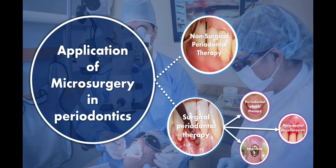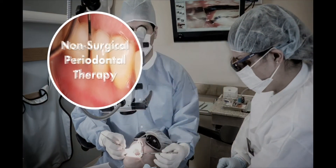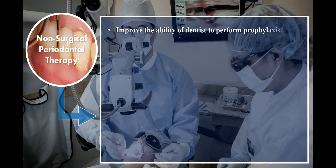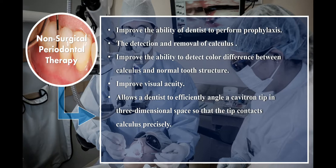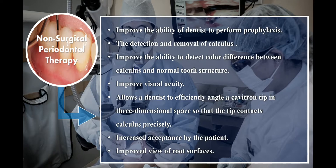In non-surgical periodontal therapy, microsurgery improves the ability of the dentist to perform prophylaxis, the detection and removal of calculus, and improves the ability to detect color differences between calculus and normal tooth structure, improving visual acuity and allowing the dentist to efficiently angle a cavitron tip in three-dimensional space so that the tip contacts calculus precisely.